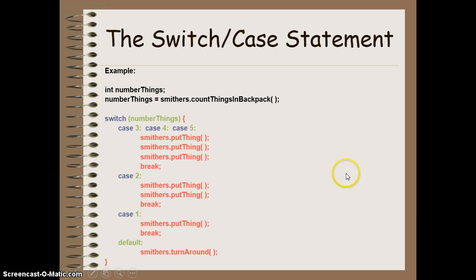So that's what it might look like in code. I'm going to switch based on the number of things in my backpack. If there are 3, 4, or 5 things, I'm going to put 3 things down and then break. If there are 2 things in my backpack, I'm going to put 2 things down. If there's one thing, put one thing down. Otherwise, I'm just going to turn around.